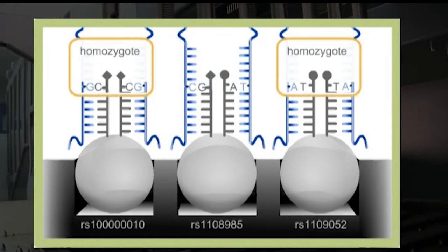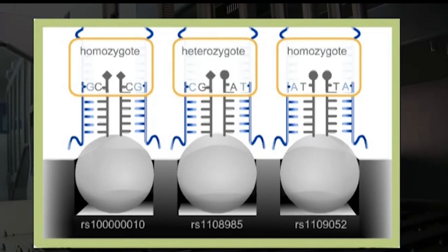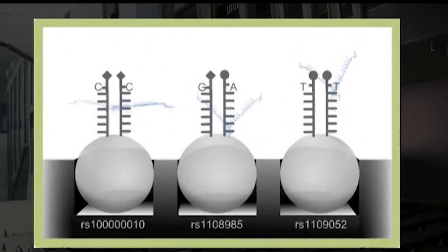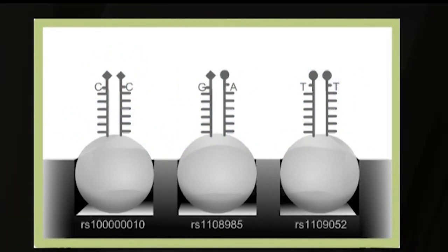A homozygote will have identical labels bound to the bead and a heterozygote will have a mixture of biotin and dinitrophenyl labels bound to the bead. Once the labels have been bound to the probe, the DNA template is no longer needed and is washed off the array. This means that only the labeled probes will be left on the beads.